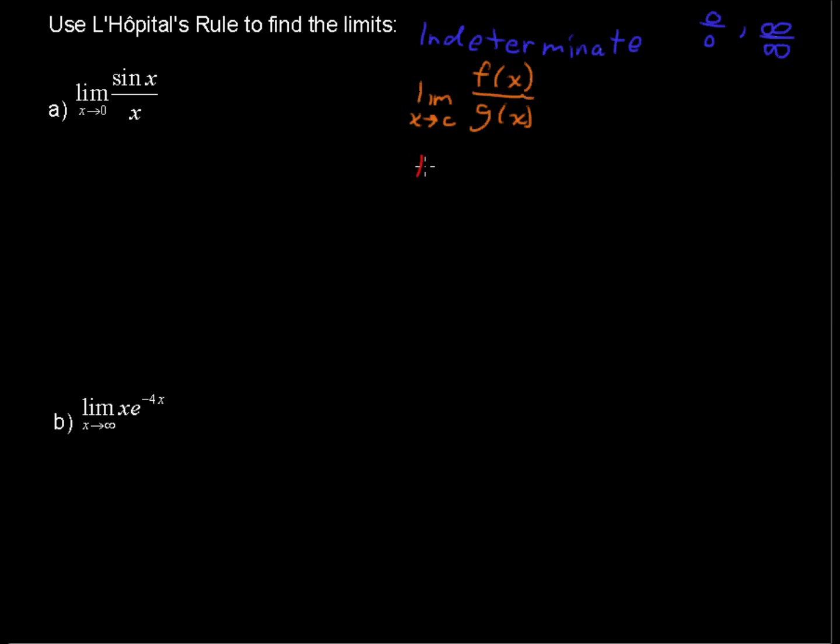Now, if we plug in c, if f(c) over g(c), if we plug in c there, if that equals 0 over 0, or if that equals infinity over infinity - I know we can't equal infinity, but you get the idea. If we plug in x and we get infinity in the numerator or growing without bound in the numerator and growing without bound in the denominator, these are both indeterminate forms. And when we have either of these indeterminate forms...